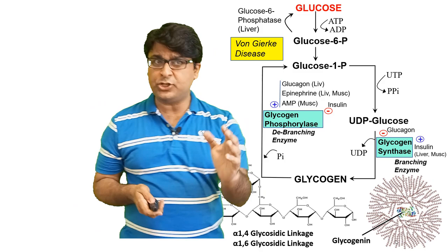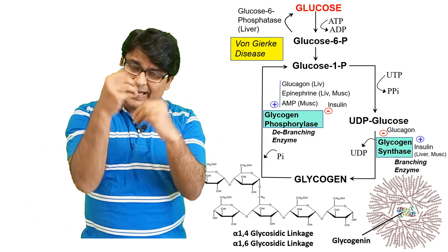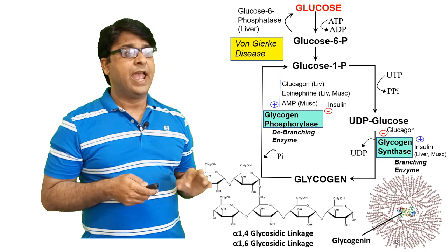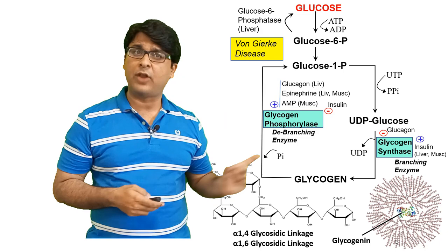That's all you need to know about glycogen metabolism. All those structural details and mechanisms of how bonds are produced are low-yield and not typically tested on exams. Remember the overall picture, remember the pathological association, and that's you sorted for glycogen metabolism. I will see you soon in the next video. If you like the video, please subscribe to the channel, share the video with your friends, and I'll be back with another video on a new metabolic pathway. Thank you very much.